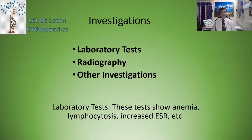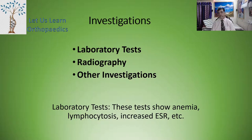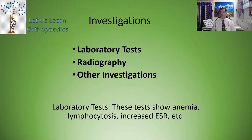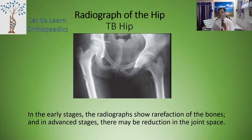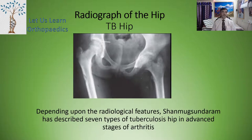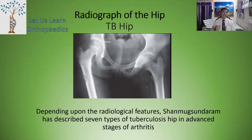Coming to the investigation part, the various investigations include laboratory tests, radiography, and other investigations. Laboratory tests show anemia, lymphocytosis, increased ESR, etc. — all suggestive of chronic infection. The radiograph of the hip joint in the early stages shows rarefaction of the bones, and in advanced stages there may be reduction in the joint space. Depending upon the radiological features, Shanmukh Sundaram has described seven types of tuberculosis hip, particularly in advanced stages of arthritis.